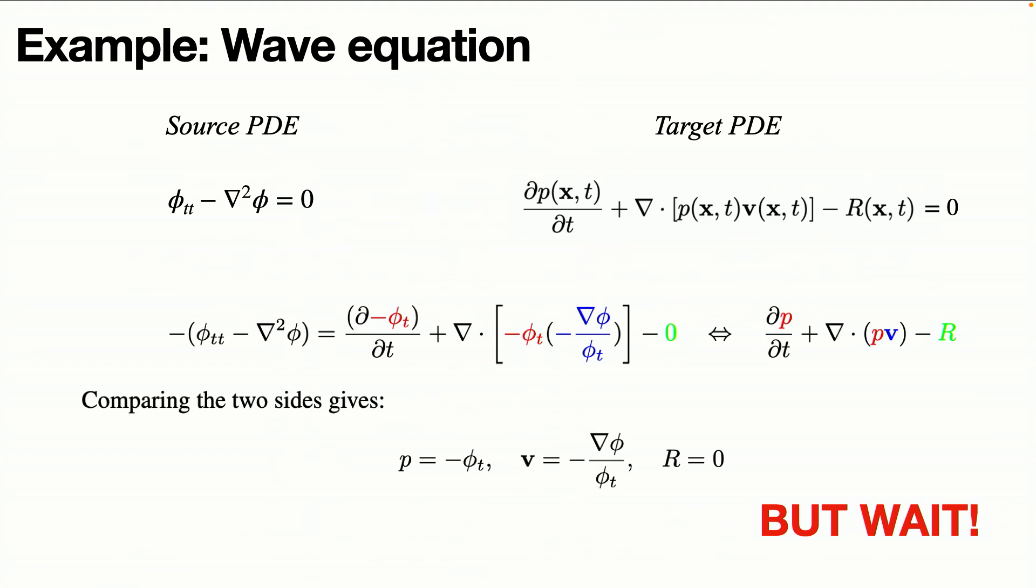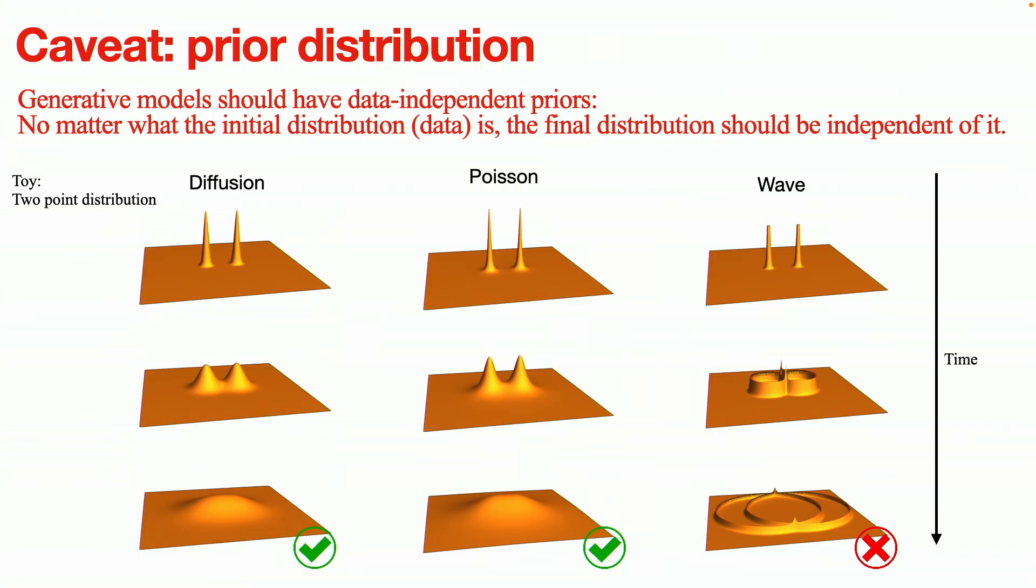But will the success continue? It looks like everything works so easily well, but let's look at the wave equation. So if you do the same homework, you would see that it looks like you can very easily convert it into a Fokker-Planck equation, hence there might be looks promising there will be a wave generative model. But there is one caveat.